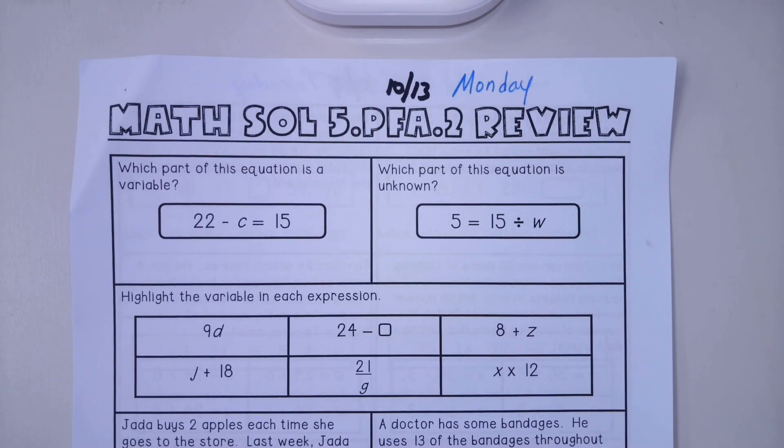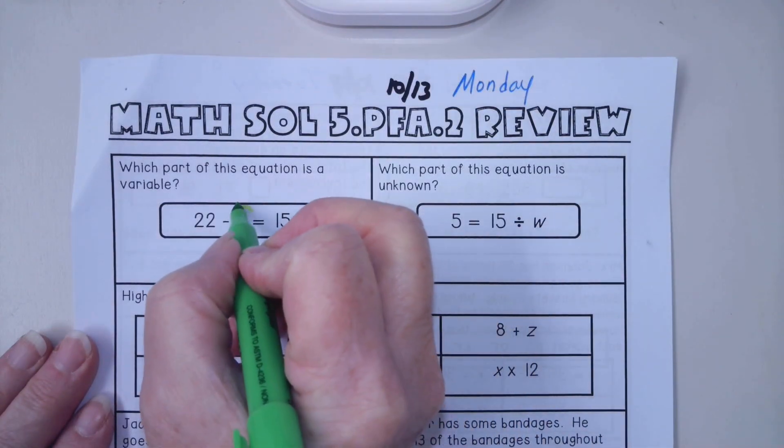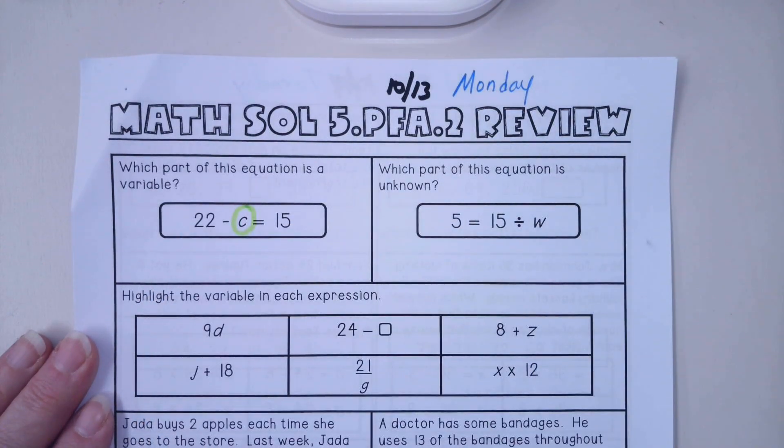So part one or question one says, what part of this equation is a variable? And what we have learned so far is that a variable is written as a letter, and usually it's a lowercase letter. So C is our variable.